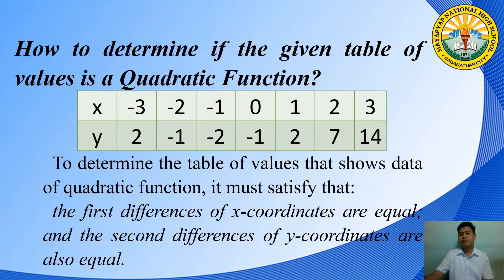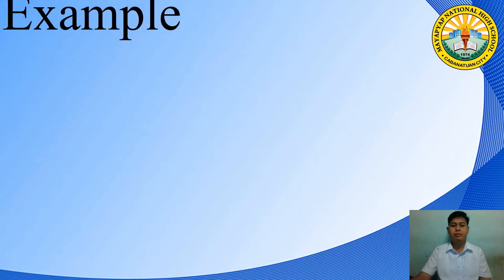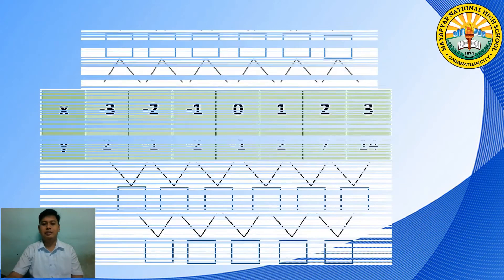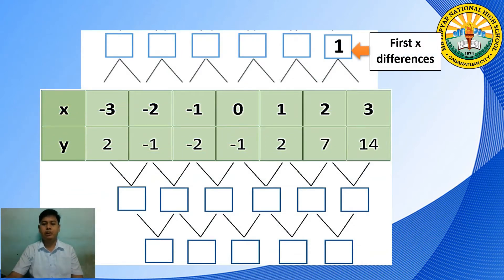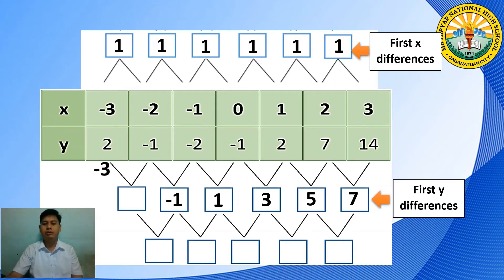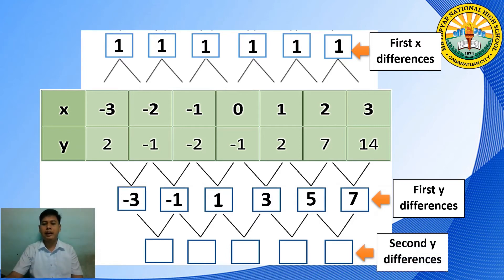Let's take the given example. Given the table of values on the screen, first we must get the first x differences. Note that to get the difference, you must subtract the number from the right from its next number to the left. So: 3 minus 2 equals 1, 2 minus 1 equals 1, 1 minus 0 equals 1, and so on up to the last first x differences. Second, let's get the first y differences: 14 minus 7 equals 7, 7 minus 2 equals 5, 2 minus negative 1 equals 3, up to negative 1 minus 2 equals negative 3.